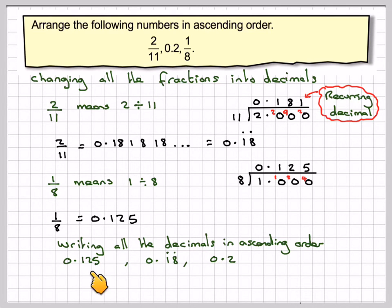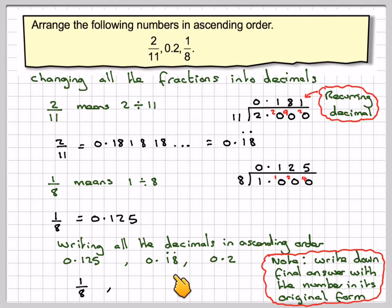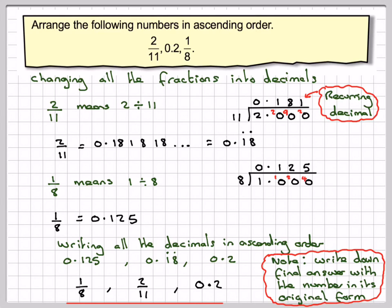It's very important that you write those out first. However, when you write down the final answer, you need to write it with the numbers in their original format. So 0.125 came from 1 eighth, 0.18 recurring came from 2 elevenths, and 0.2 is 0.2 because it's already in that format. It's very important that you write down the numbers in the original format of the question.